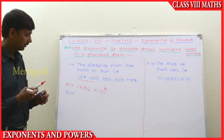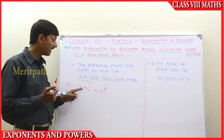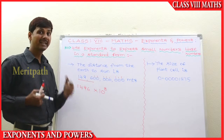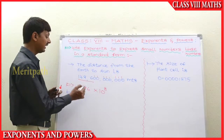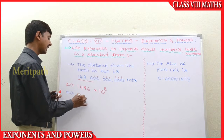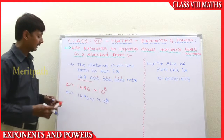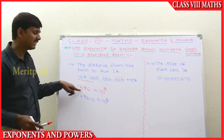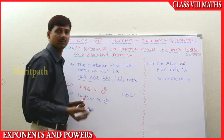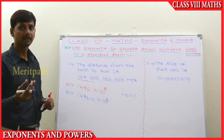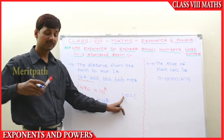Let's take this type of form. This is the largest number — it's looking like a very large number, so we need to make it a smaller number. Let's place the decimal point here. That means 1496.0 into 10 to the power 8. So we take 1.0, which can be written as 1, since there is no decimal value.